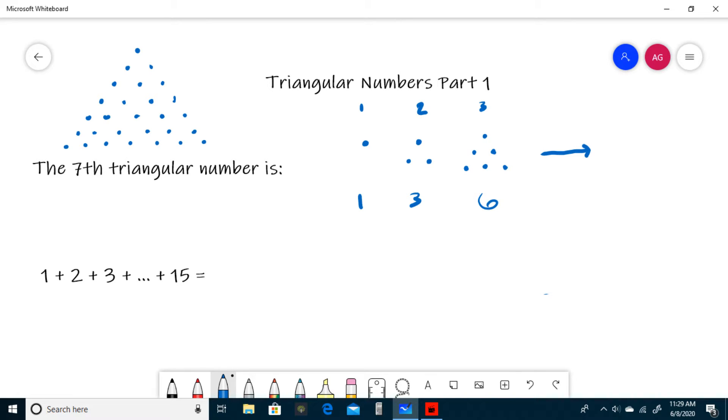So the seventh triangular number is just the number of dots in this triangle that has a base of seven dots. There is one dot in this top row, then two dots in that row, three, four, five. So really we can just do one plus two plus three all the way up to seven.